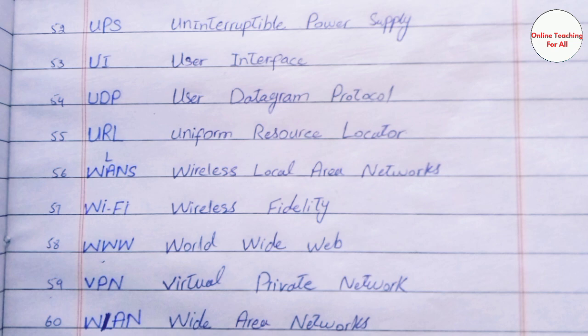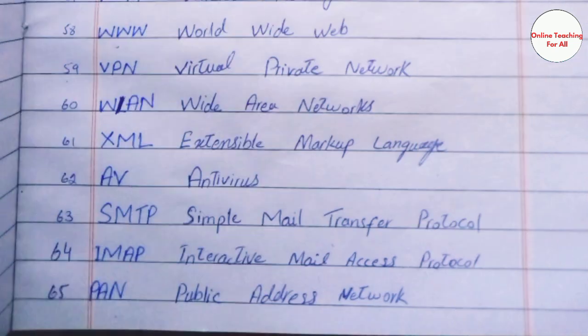WWW - World Wide Web. VPN - Virtual Private Network. WAN - Wide Area Networks. XML - Extensible Markup Language. AV - Antivirus. SMTP - Simple Mail Transfer Protocol. IMAP - Interactive Mail Access Protocol.